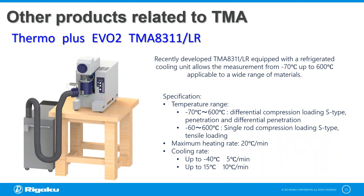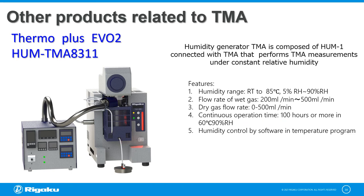We also have the recently developed TMA 8311 equipped with a refrigerator cooling unit that allows you to measure from minus 70 degrees centigrade up to 600 degrees centigrade, corresponding to differential and non-differential or single rod attachments. One of the options for TMA is a humidity generator system that enables creation of a water vapor atmosphere ranging from room temperature to 85 degrees centigrade, 5% to 90% relative humidity, with a continuous operation time of 100 hours. Using this system, the water vapor atmosphere can be controlled by the software in the temperature program.